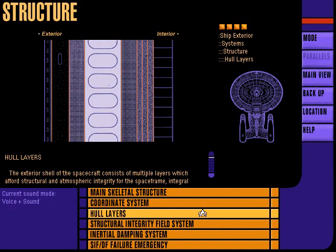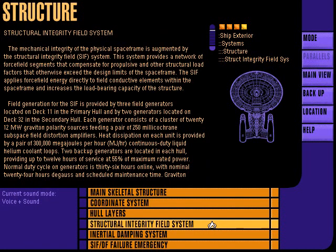Multiple exterior hull layers provide structural and atmospheric integrity, wave guides and field conductive members for the structural integrity field, and pathways for other utilities. The structural integrity field system provides a network of force field segments to compensate for propulsive and other structural load factors that otherwise exceed the design limits of the space frame.